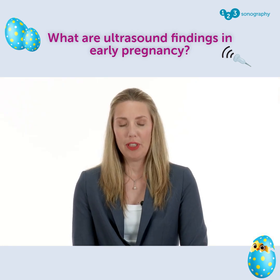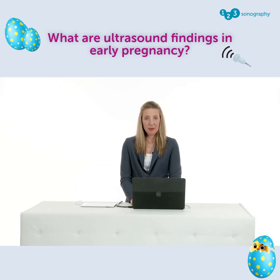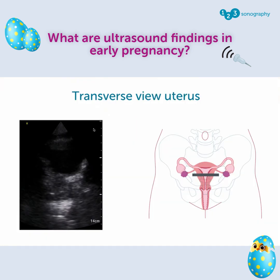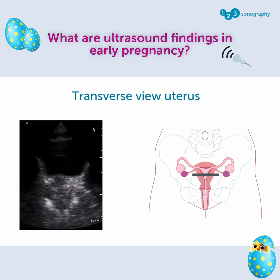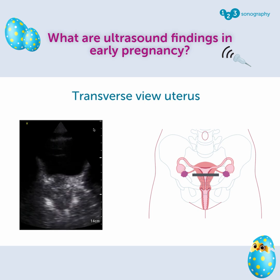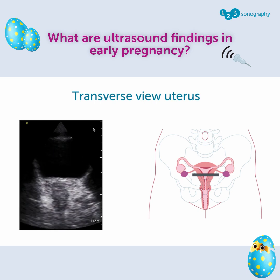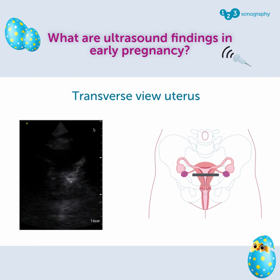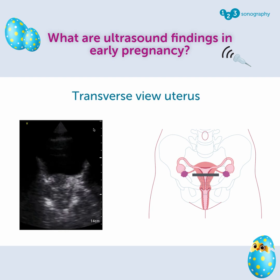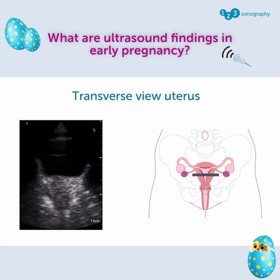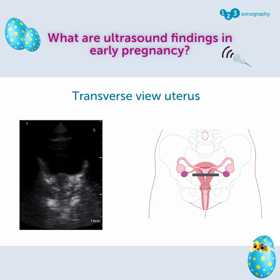Let me now show you how to achieve these images. To show you a transverse view of the uterus, look at the left side of this image. On the right side you find the gray line, which is the position in the uterus where this ultrasound image is made.